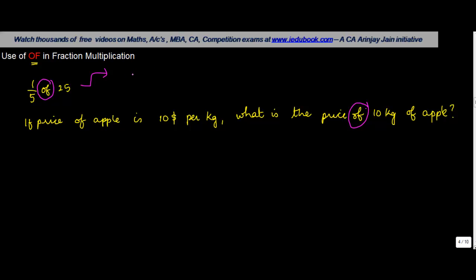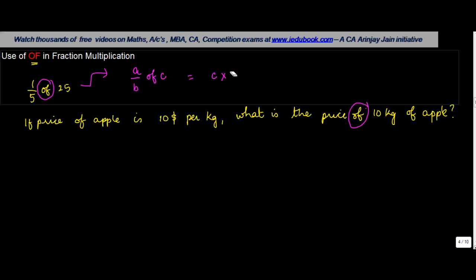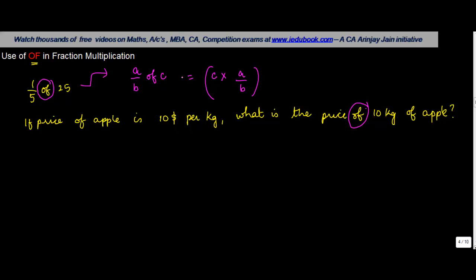Whenever you have something like 'a/b of c', this basically means you have to multiply c by a/b. In other words, you have to find the fraction of c which is a upon b.